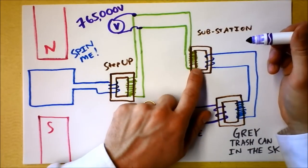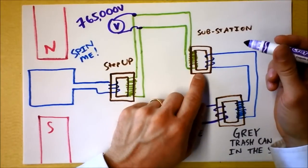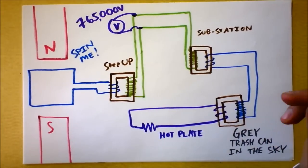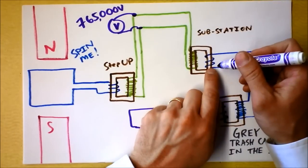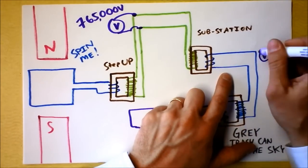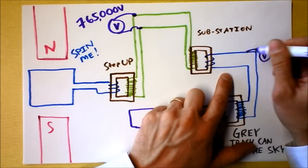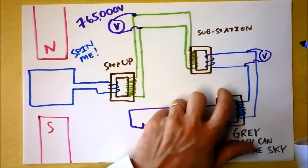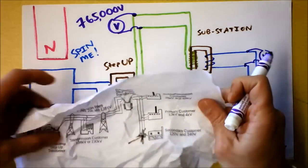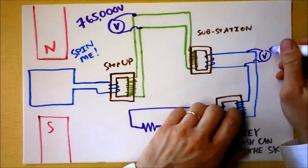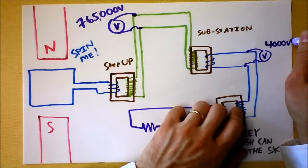And then we get to a substation. So it's finally gotten to my town, and at that substation there's some chain-link fence, and inside of it there's another transformer taking us from high voltage back down to a lower voltage. Let's say this lower voltage, what did Wikipedia say? Let's call it 4,000 volts.